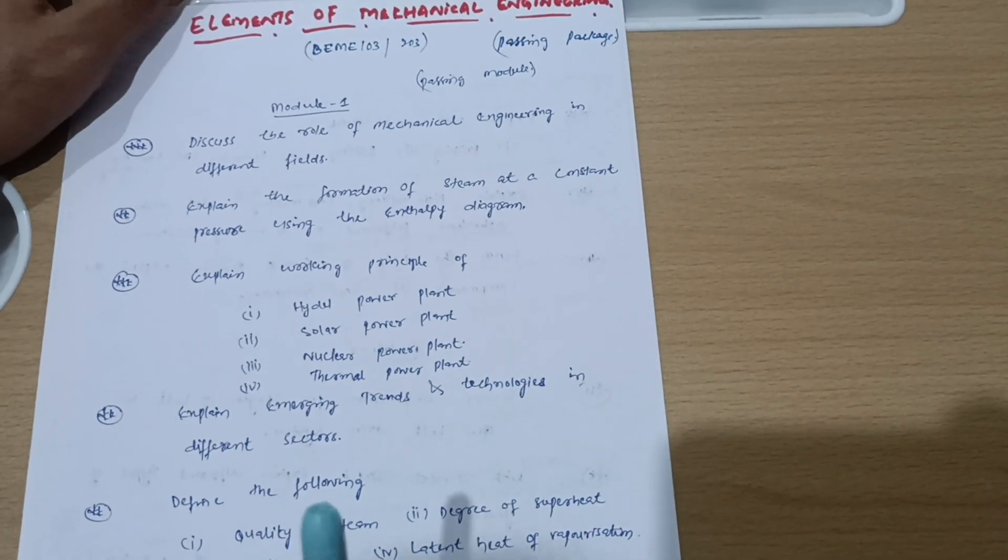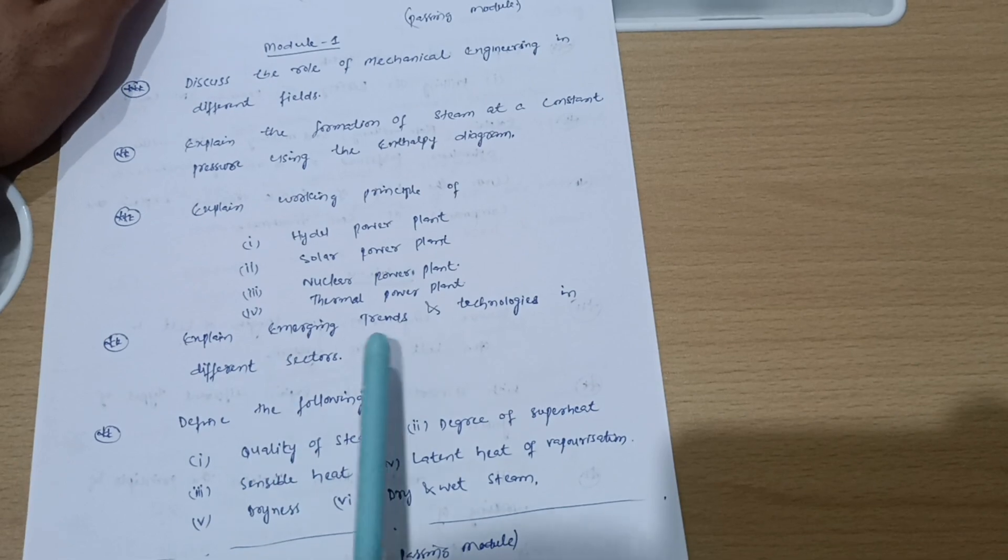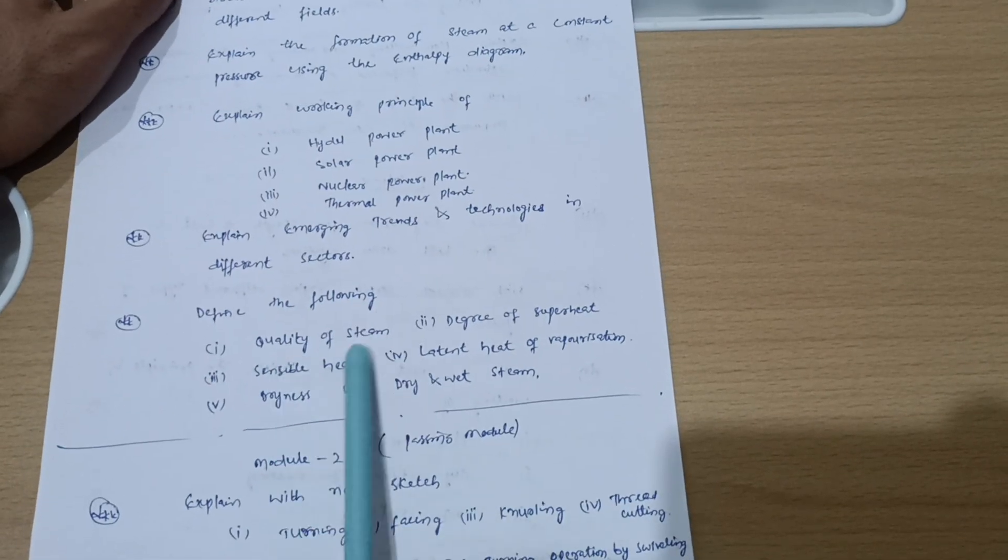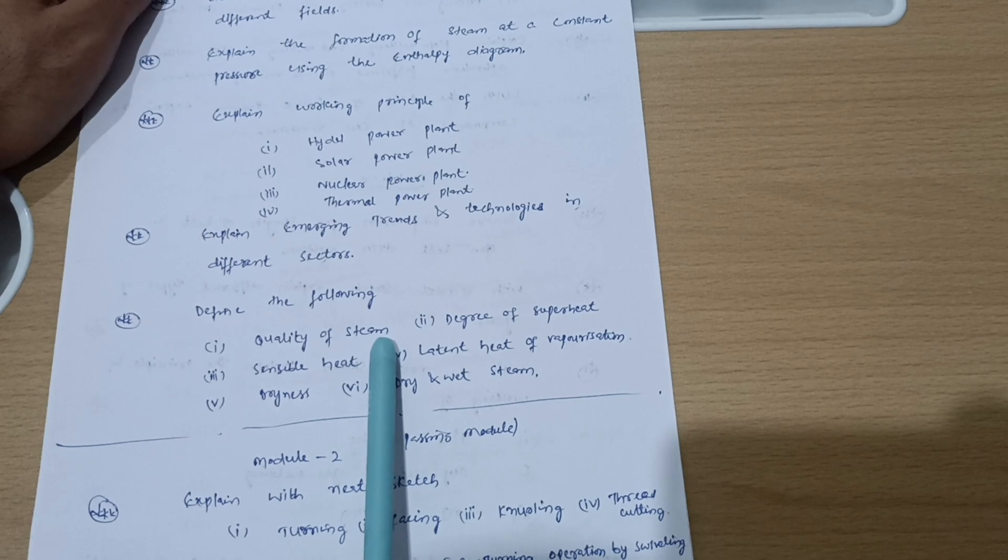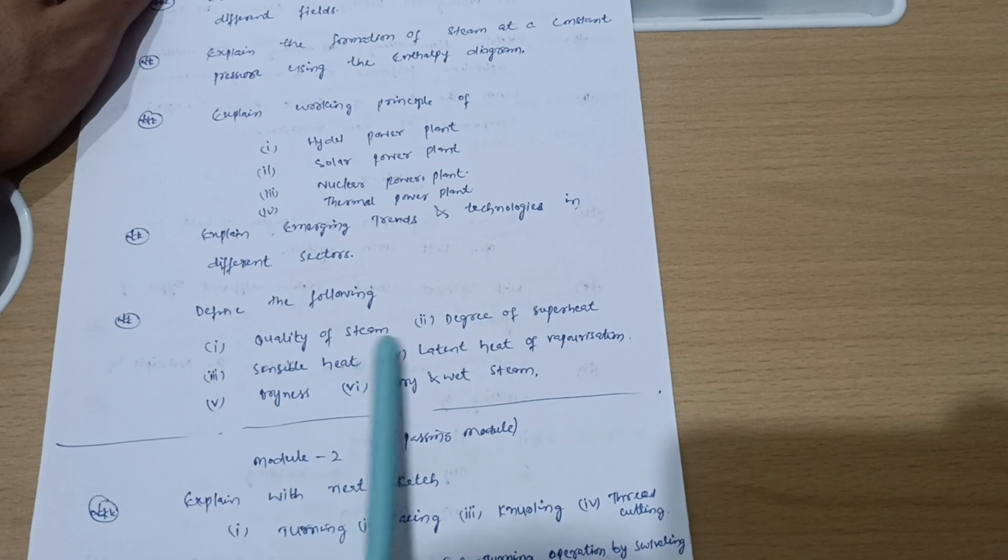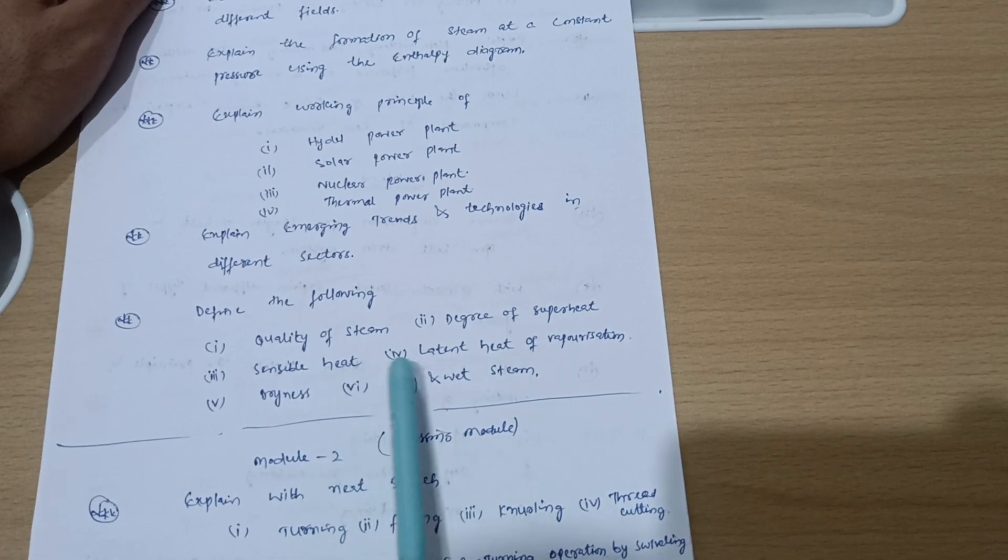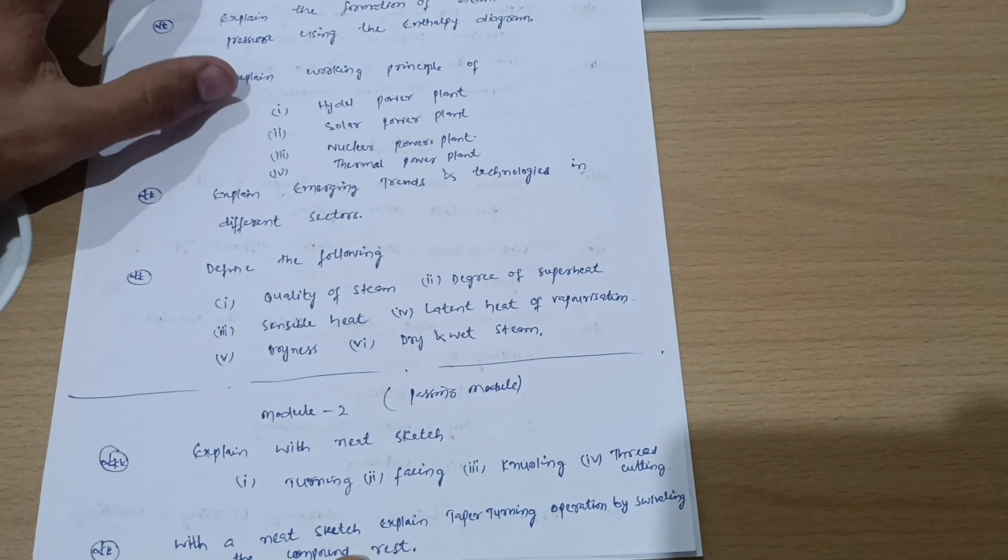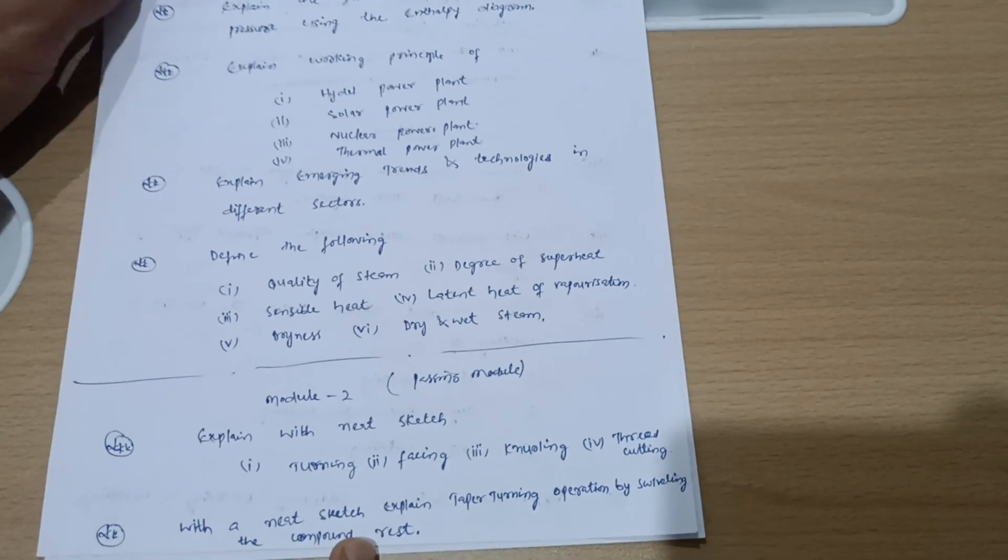Next is explain emerging trends and technologies in different sectors and define the following. These are the terminologies, one or two marks, definitions. You should remember these definitions: quality of steam, degree of superheat, sensible heat, latent heat of vaporization, dryness, and dry and wet steam. This is all about module first, go through these portions whatever I have mentioned.